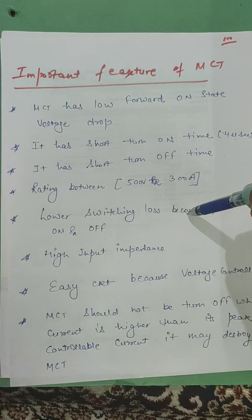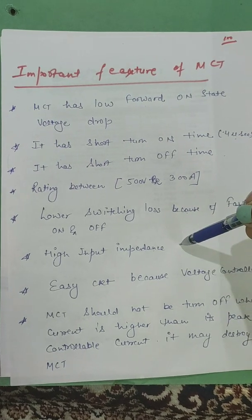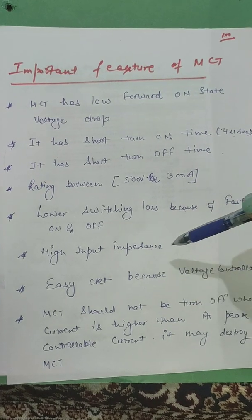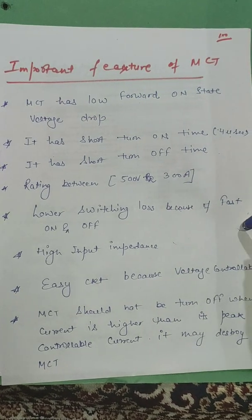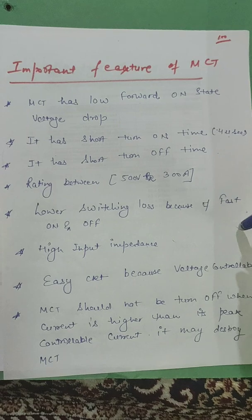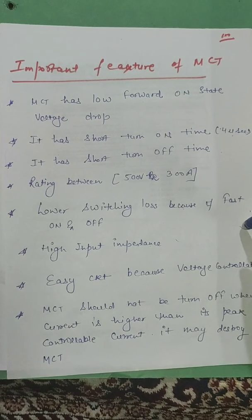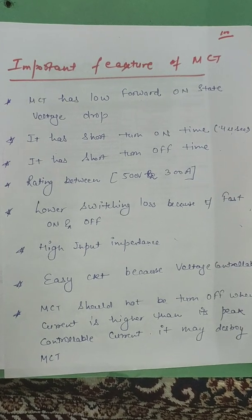Because of it, it is fast on and off, it has lower switching losses. It has very high input impedance because of SiO2 layer. Easy circuit because voltage controllable. It is voltage control device. It has very easy circuit.